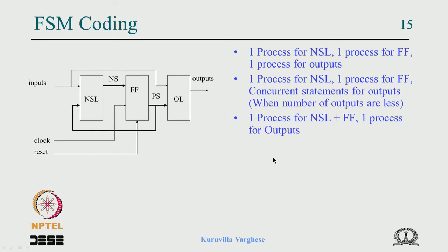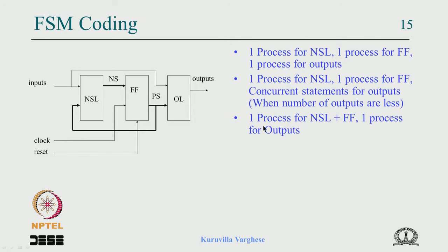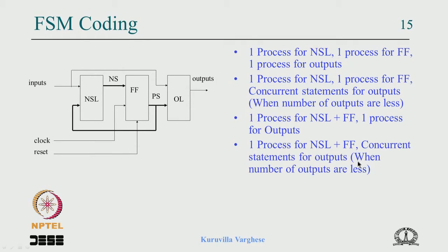A third way is that we know registers with the preceding logic can be written in a single process. So we can write one process for the flip-flop and the next state logic together, and one process or concurrent statement for output. If the number of outputs is less, you can write concurrent statements for output while combining the next state logic and flip-flop in a single process. These are the four different ways you can code the FSM by looking at the block diagram.